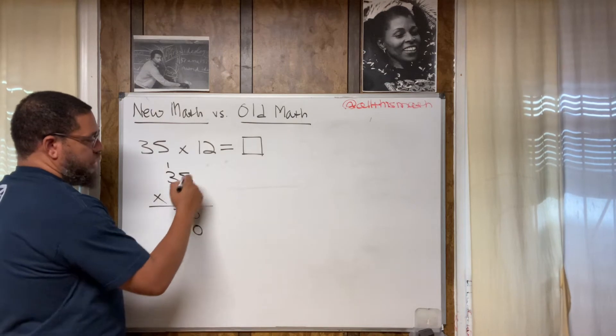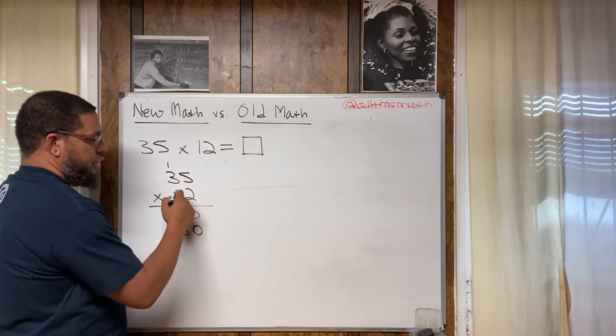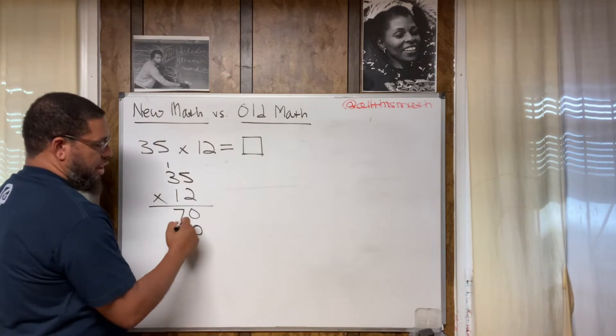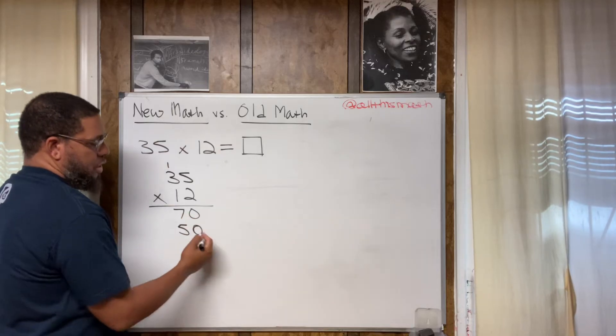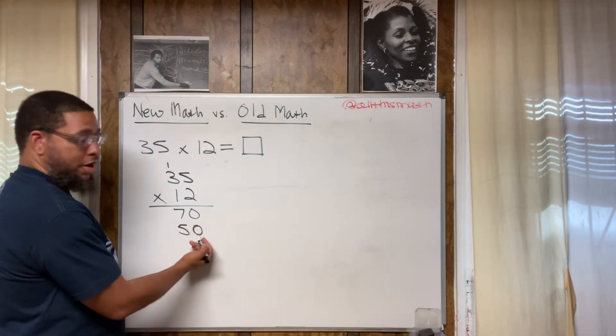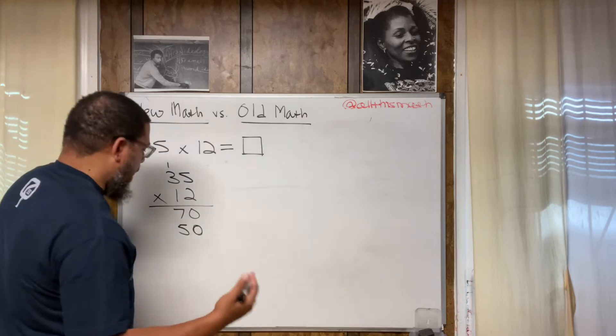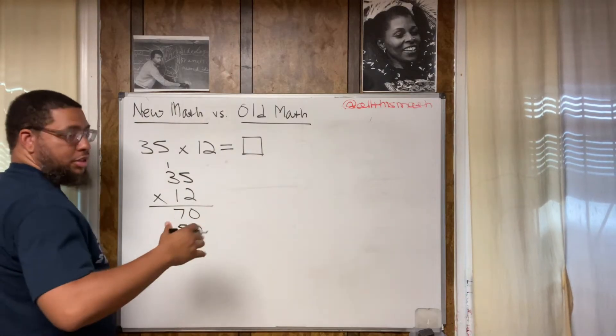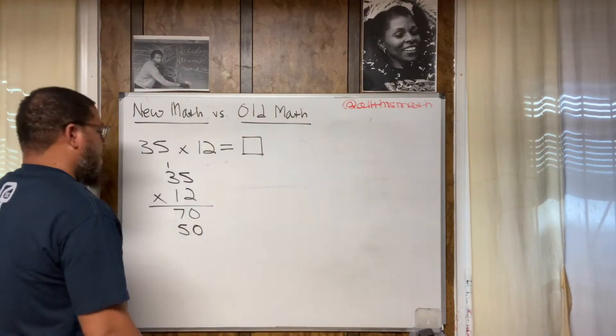We're really not doing one times five. We're really doing, for real, we're doing 10 times five. That's why we get five right here in the tens place. And that's why some teachers say to put a zero right here. So try to always understand why, like why you do what you do when you're following these different algorithms that you see in math.